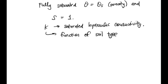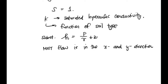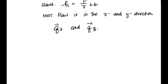So we can use Darcy's equation. We can substitute H = P/gamma + Z. We can also say that most flow is in the X and Y direction — we're talking about lateral movement again. So you end up with a Q in the X and a Q in the Y direction, and this is pretty typical for flow through our aquifers.